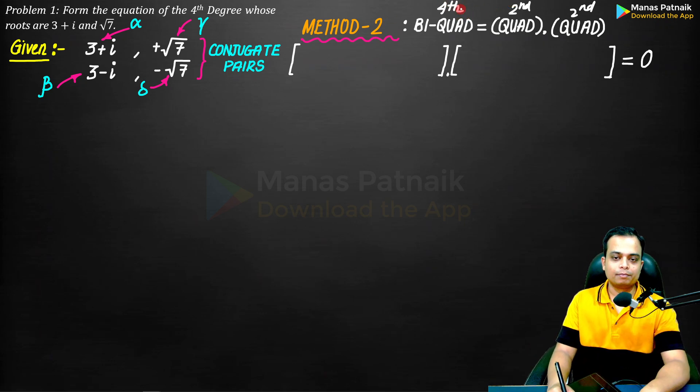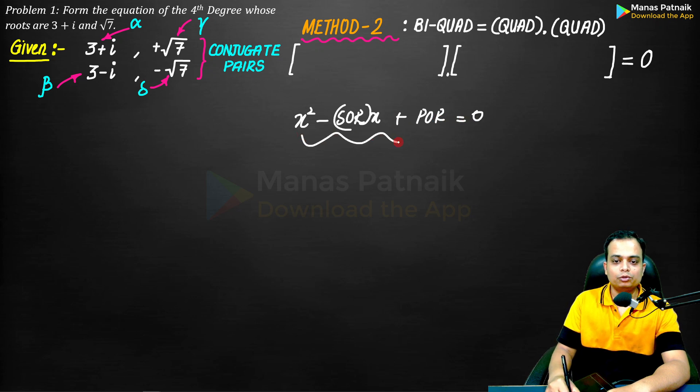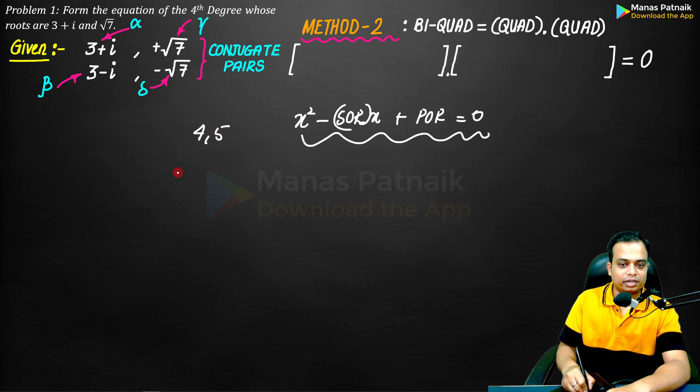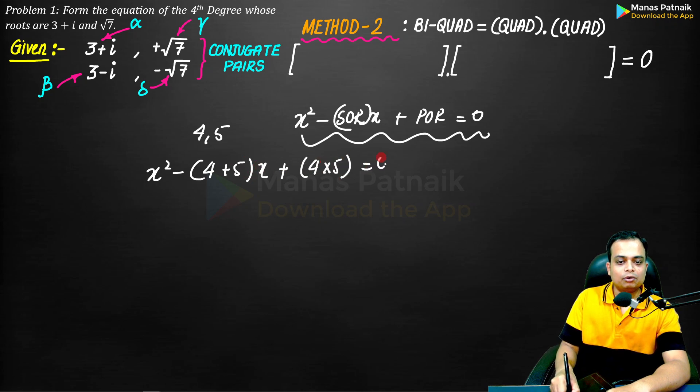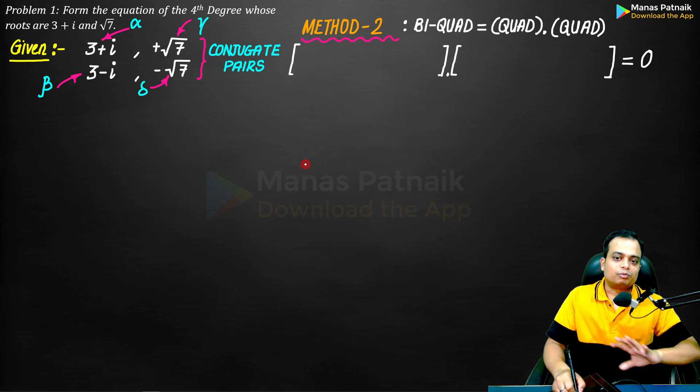Now we know from school that x square minus sum of the roots into x plus product of the roots equals zero. This is how we used to frame our quadratic equation. Let's say 4 and 5 are the roots of a quadratic equation. Then what we would write is x square minus 4 plus 5, sum of the roots into x, plus product of the roots, that is 4 into 5. This is how we framed our quadratic equation. We are going to use the same approach but on an individual basis.